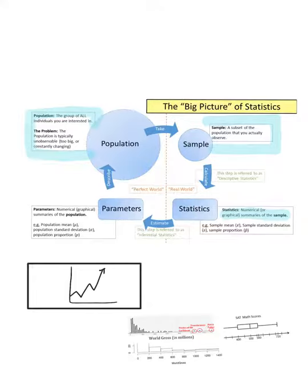Once we have our statistics, we can start looking at the parameters of the population. This step is called inferential statistics because we're kind of estimating at this point. It's important to point out that the population data and the sample data have different ways that they're represented.